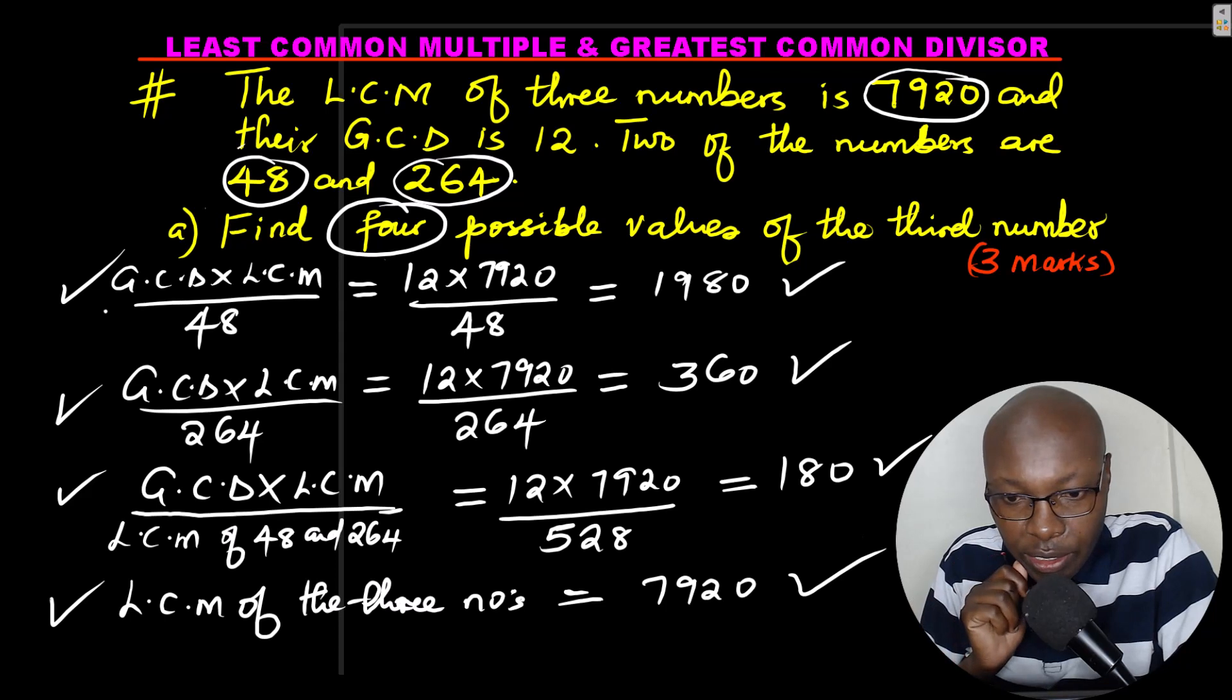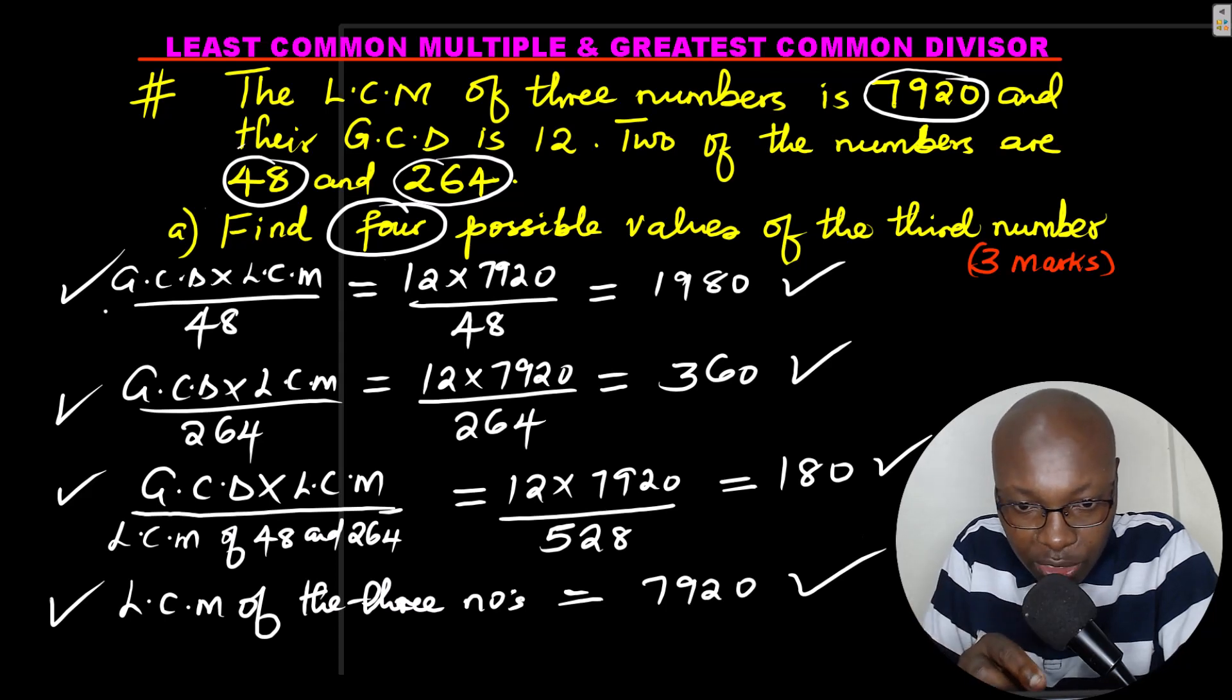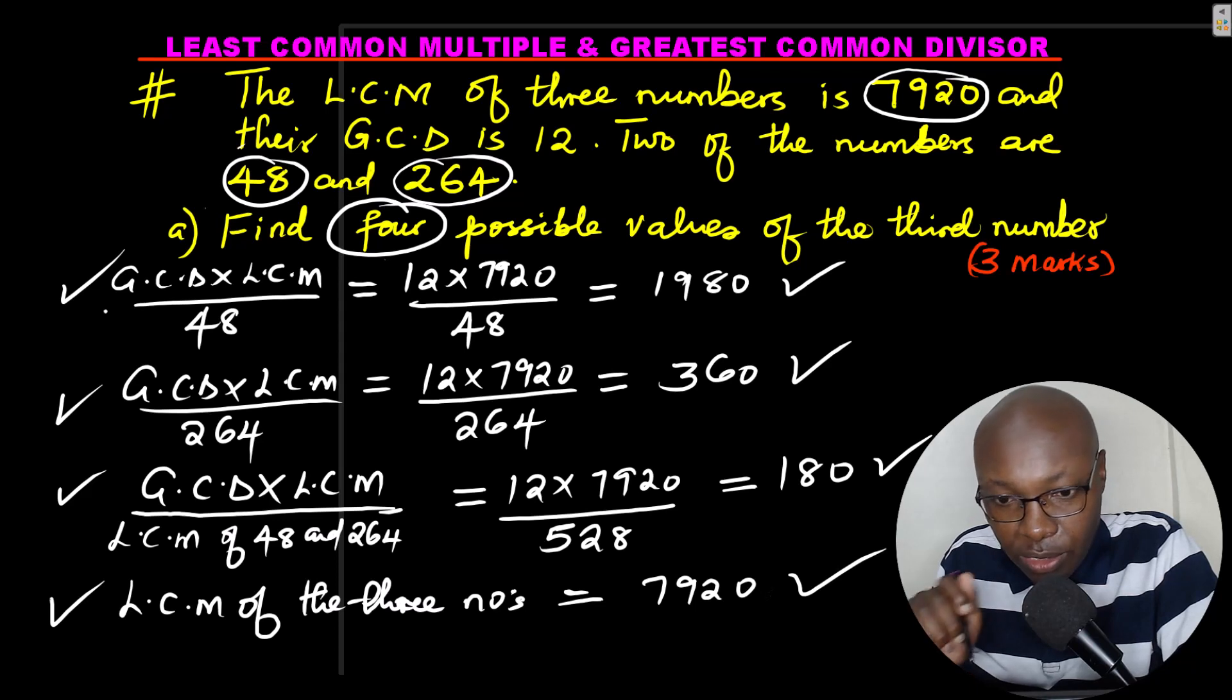I'd like you to try this. Get the LCM of the two numbers given, that is 48 and 264, and 7920. You get the least common multiple as 7920. So all these are the values of the four possible numbers. Yes, that is the third number. So that number can either be 1980, 360, 180, and 7920. So that is how you work out that part.